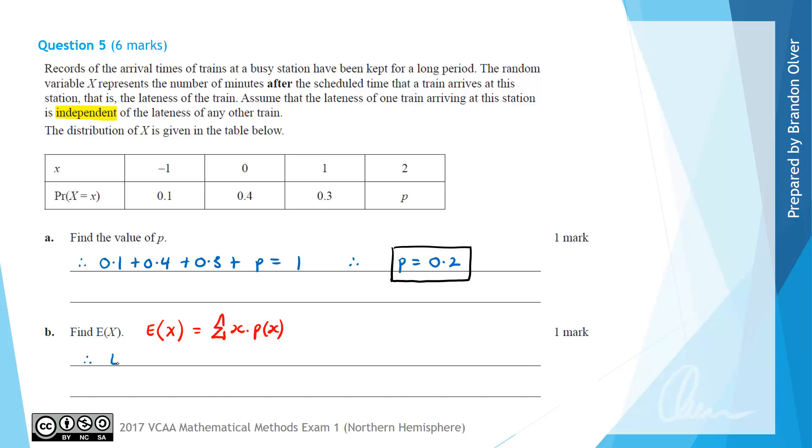So therefore the expected value of X for this discrete random variable is going to equal, and X times P of X will be negative 1 times 0.1 plus 0 times 0.4 plus 1 times 0.3 plus 2 times P